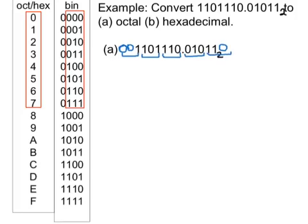My next step is to replace each of the three-digit binary numbers with its octal equivalent. The first binary number 001 in octal is one. The next one, 101, in octal is five. The next one, 110, in octal is six. Then we put in our fractional point — the next one will be a two, and the last one will be a six. And then we're in base eight.